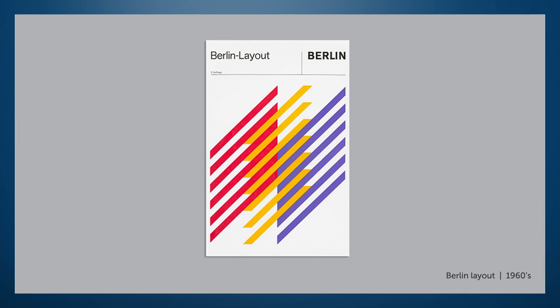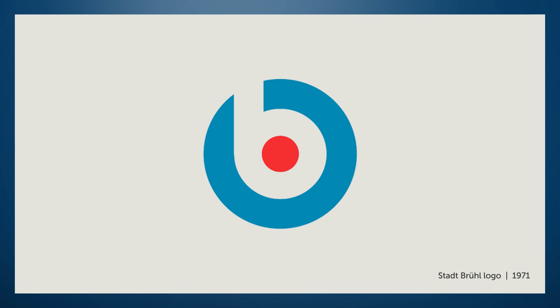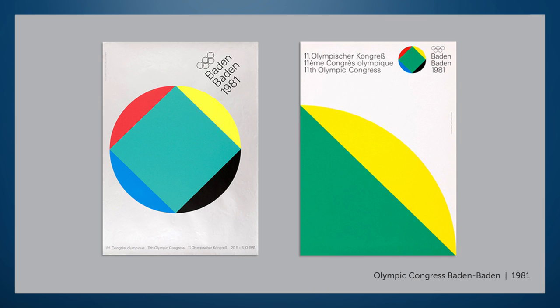In 1951 he established his own design studio in Stuttgart with a number of other well-known graphic artists of the time. Stankowski is well known for creating the Berlin layout, the city's visual identity, which he created during the 1960s. In 1971 Stankowski created a logo for Stadtbrühl, the city Brühl in Germany. Now what does this one remind you of? Stankowski is also known for creating the identity for the Olympic Congress, Baden-Baden in 1981.